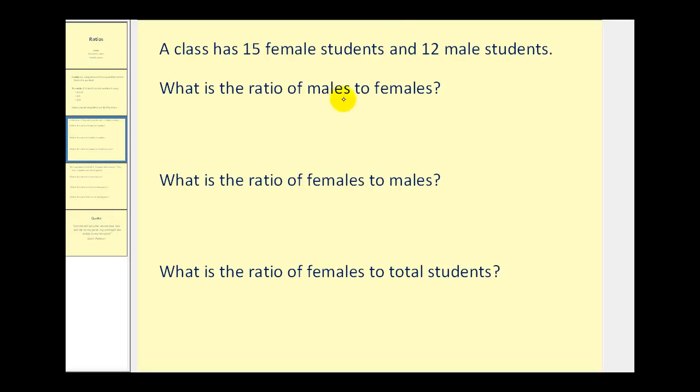What is the ratio of males to females? One of the most important things about a ratio is its order. Since we want the ratio of males to females, and there are 12 male students and 15 female students, the ratio would be 12 to 15. I'm going to write this in fraction form, so it would be 12 to 15.